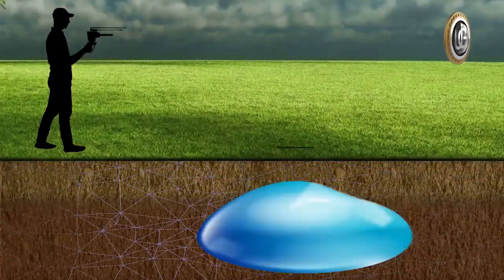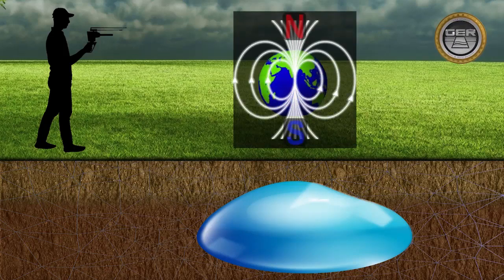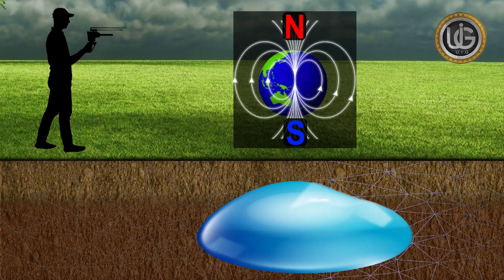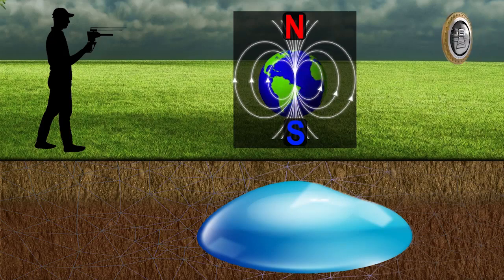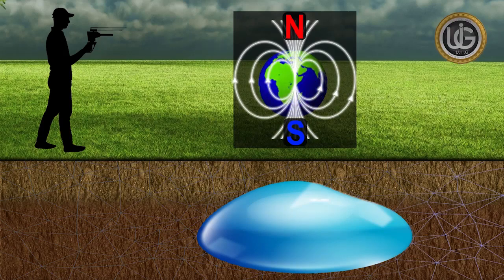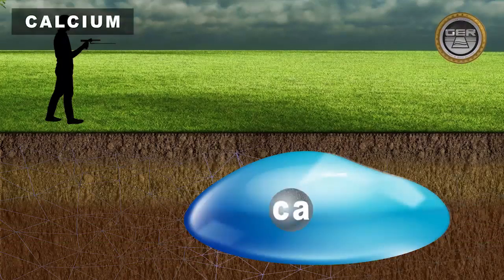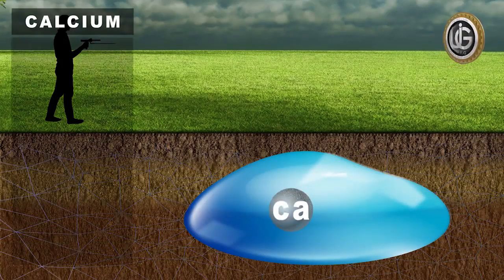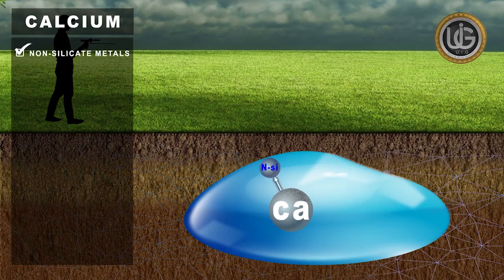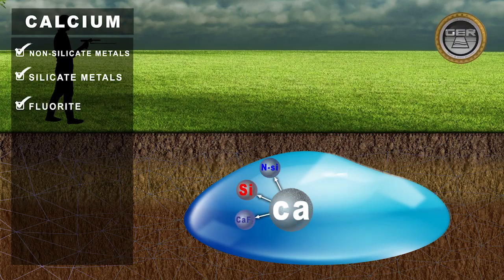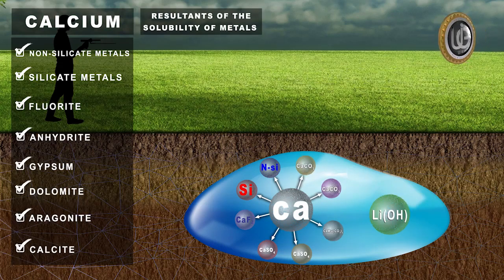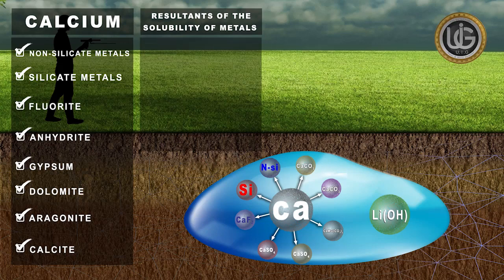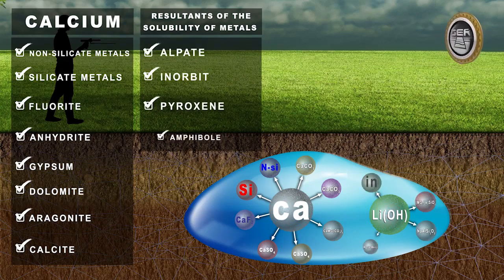Ionic fields are radiations from groundwater and artesian wells after they have been underground for some time, where they have interacted with the soil and the nature of the composition of the land and its regularity with the magnetic lines to the north and south. There are various sources of calcium ions such as non-silicate metals, silicate metals, fluoride, anhydride, gypsum, dolomite, aragonite, and calcite, as well as the resultants of melting metals found in stones and decomposed in waters such as alpete, anerbit, pyroxene, and amphibole.